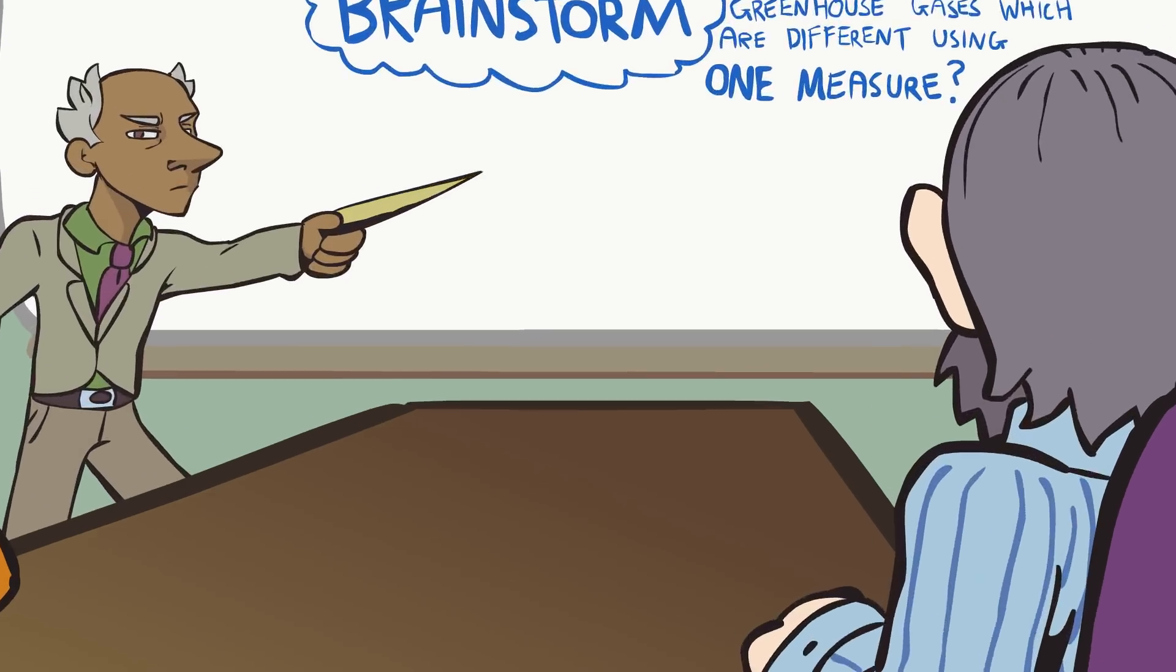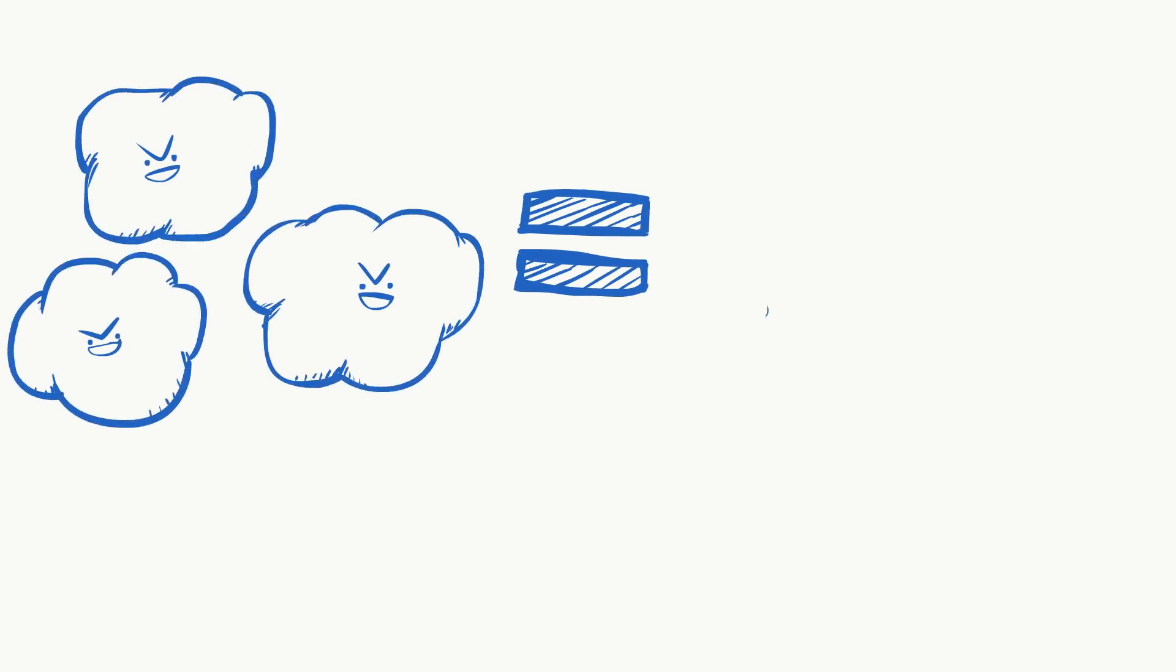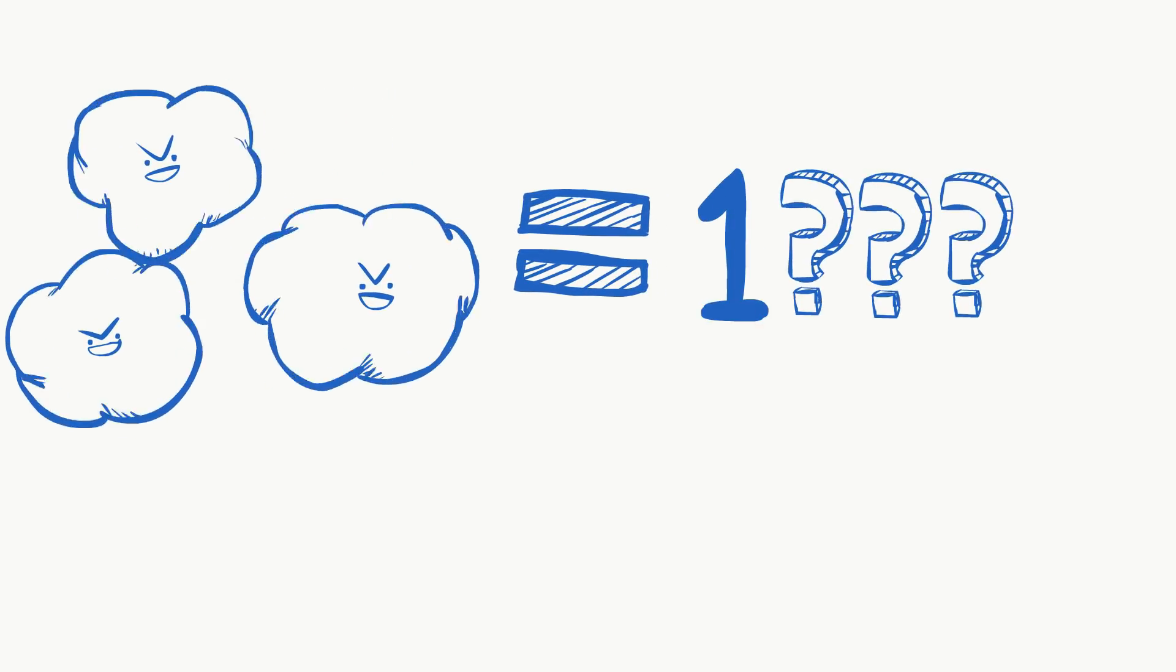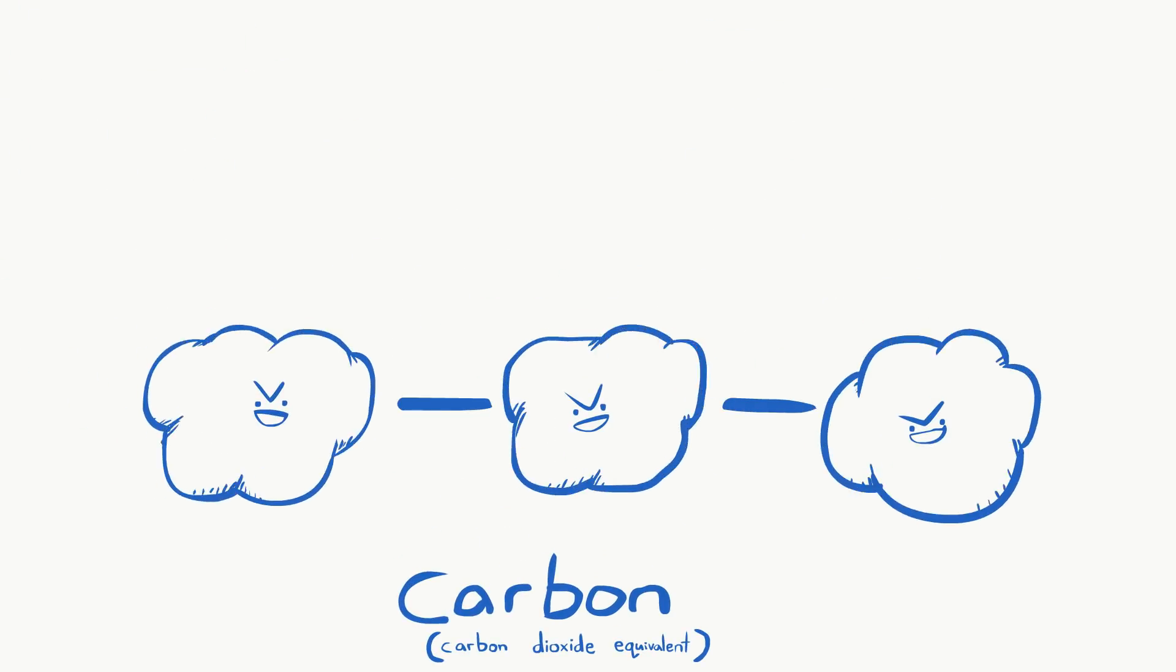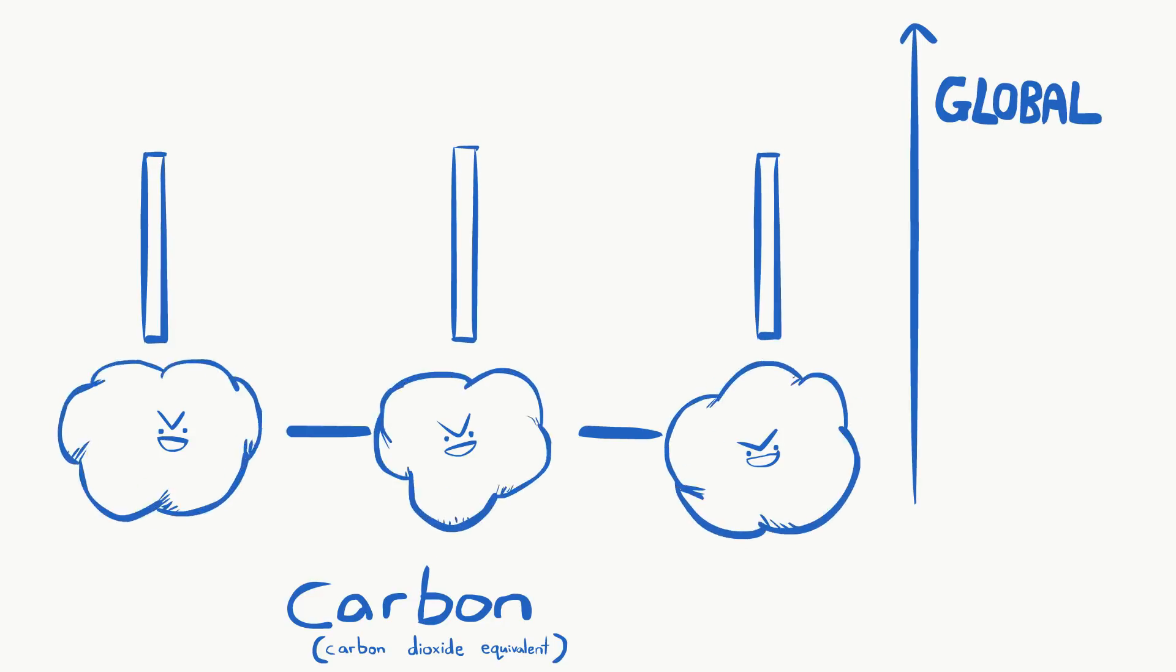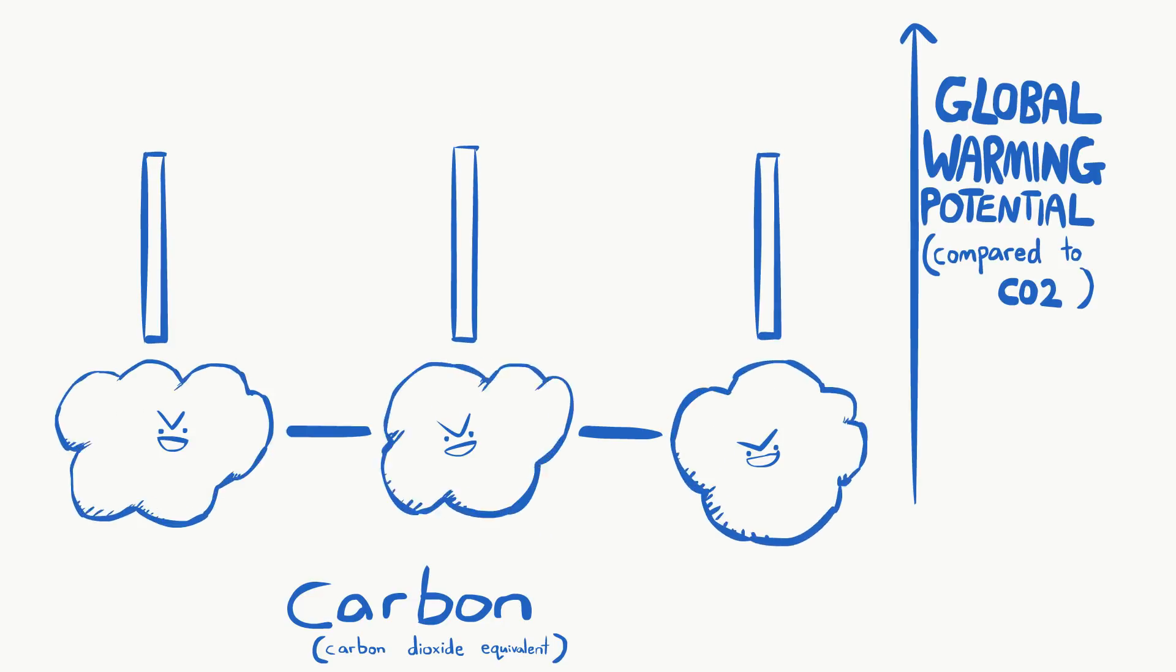The politicians wanted to come up with a way to quantify all the different greenhouse gas emissions using one measure, so that they could create emission trading schemes and make international agreements such as the Kyoto Protocol and the Paris Climate Agreement. So the climate scientists came up with the idea to invent a unit called carbon, or carbon dioxide equivalent.